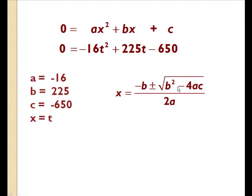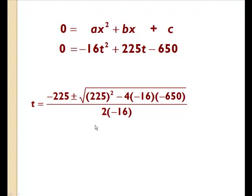So when I take the quadratic formula given by this formula over here, I'm going to substitute b for 225, c for negative 650, a for negative 16, and my x for t, to get something that looks like this.